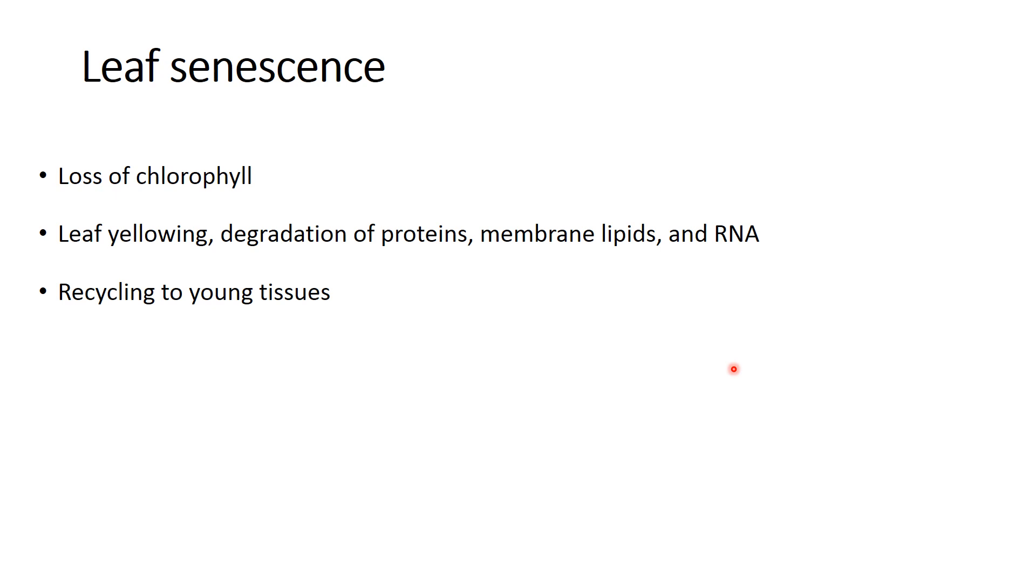So as the plant starts aging, this chlorophyll starts degrading. The loss of chlorophyll is also accompanied by leaf yellowing - the color of the leaf changes from green to yellow - and also there is degradation of proteins, membrane, lipids, and RNA. Nutrients stored in leaves are translocated from the older tissues to the younger tissues. In this way, recycling of the nutrients takes place during leaf senescence.